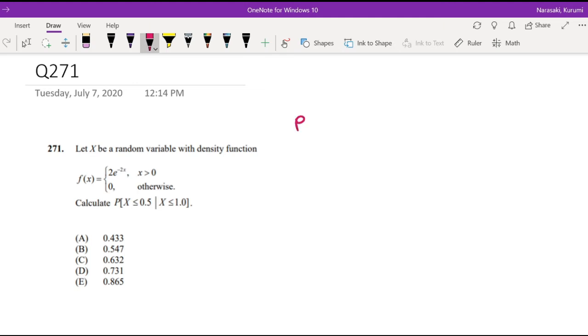As always, our favorite conditional probability formula. Probability of a given b is probability of a and b divided by the probability of b.